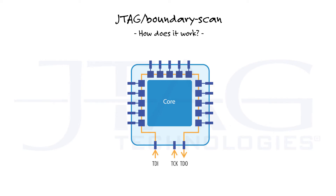A clock signal, called TCK (test clock), is used to shift data through the boundary scan register, while the TMS signal (test mode select) controls the multiplexers at the device pins.